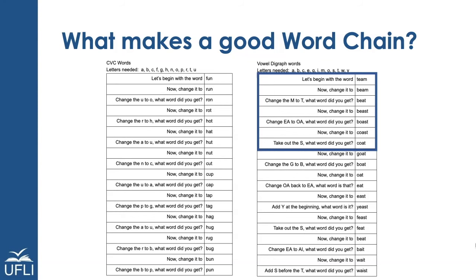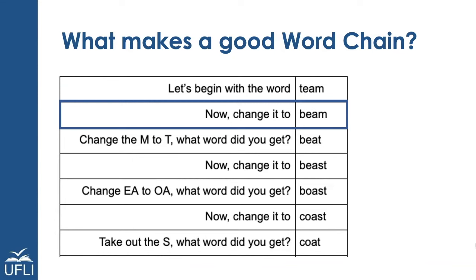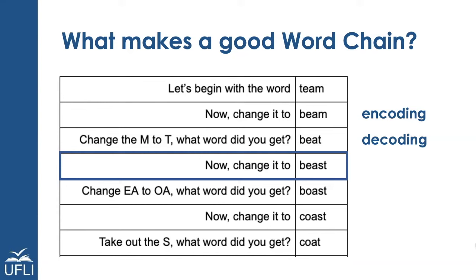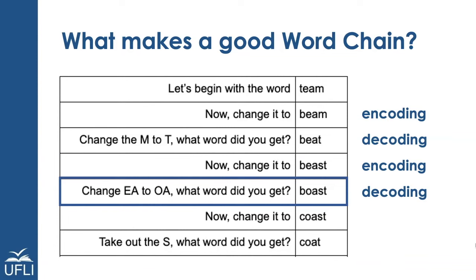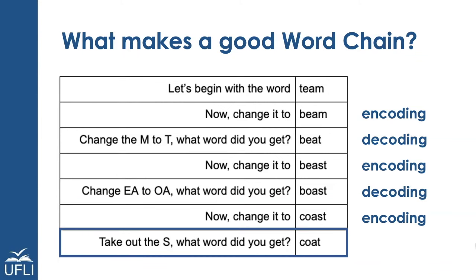Let's look at the types of changes that are happening. We start with the target word — usually a word from the text the student is reading — and ask them to spell it, then say: now change it to beam. The skill we're working on there is encoding. If we say: change the m to t, what word did you get? — now we're asking the student to apply decoding skills. Now change it to beast: they have to figure out to add an s — that would be encoding. Change the ea to oa, what word did you get? — that is decoding. Now change it to coast — encoding. Take out the s, what word did you get? Coat — again, what word did you get is decoding.